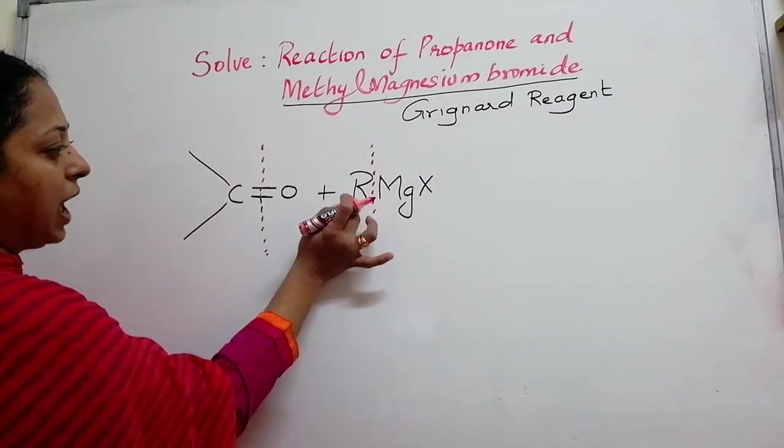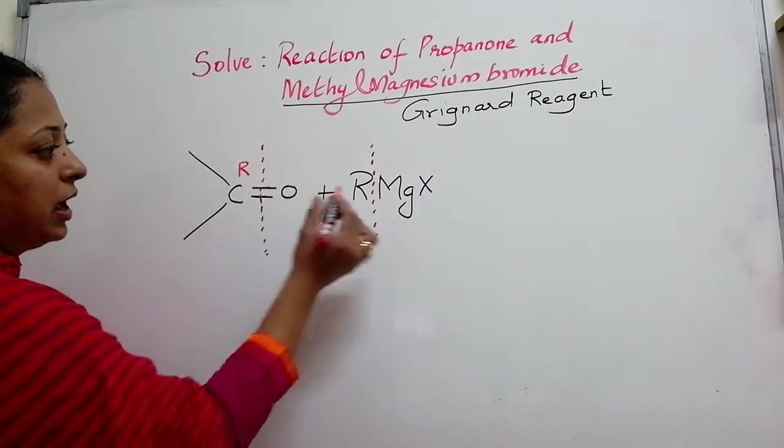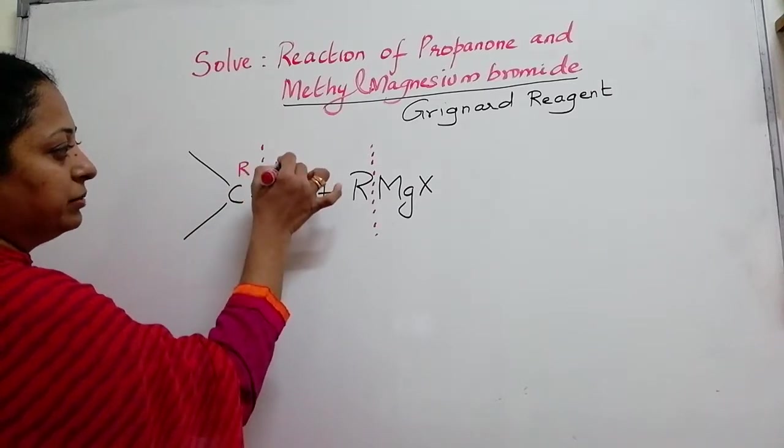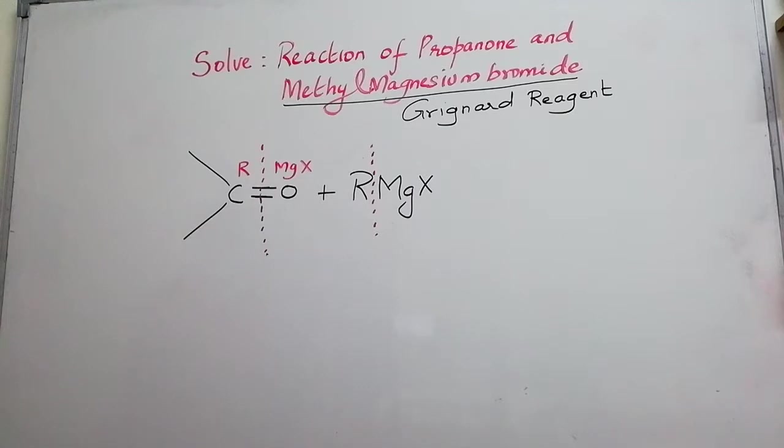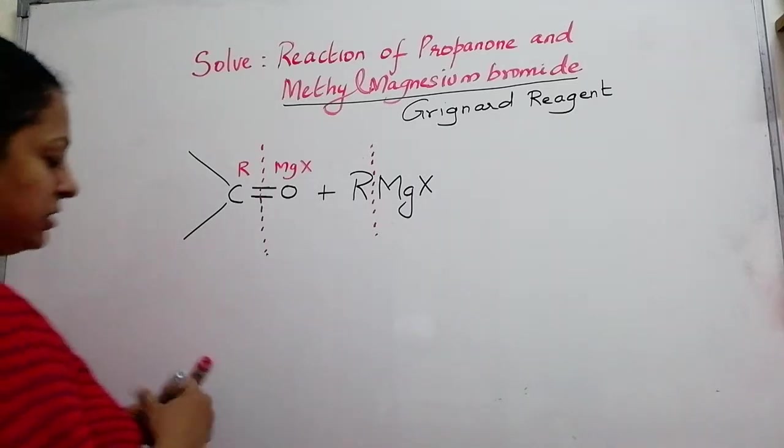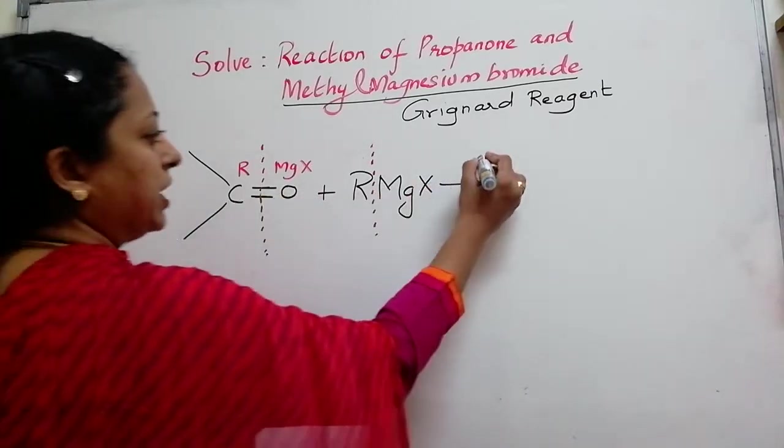R will be added to carbon because it is positive and MgX will be added to oxygen because oxygen is electronegative in nature. As a result, we get the final answer based on these changes.